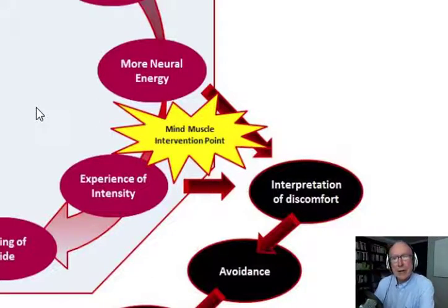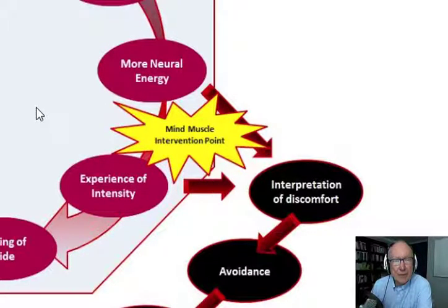So this is the mind-muscles intervention point. We reinterpret that moment of discomfort and what we do is we experience the intensity of that discomfort rather than the automated reaction. So if it's the automated reaction, the interpretation of that requirement, that firing, the needing more neural energy is interpreted as discomfort. We then avoid the discomfort.